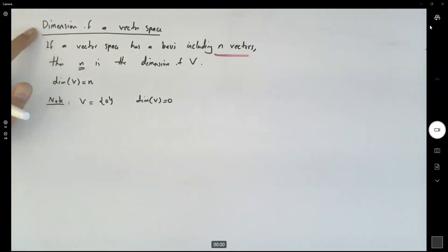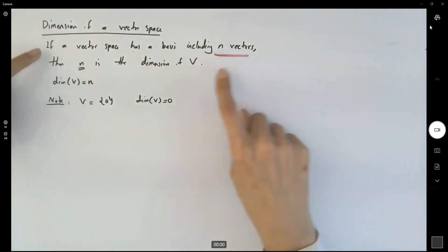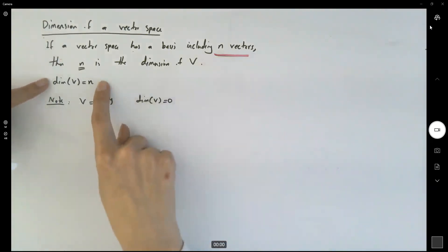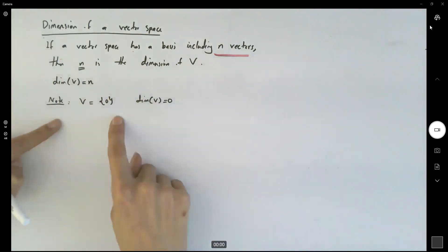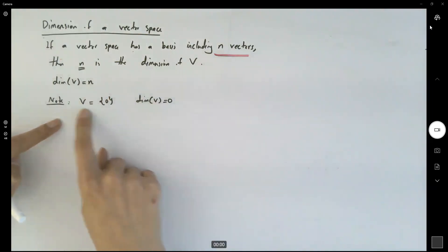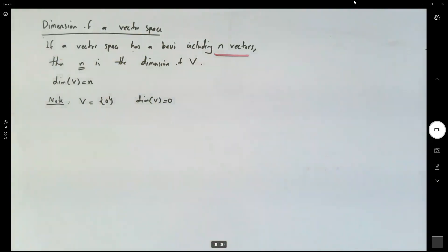The dimension of a vector space. If a vector space has a basis including n vectors, then we say that the dimension of that vector space is equal to n. Please note that if your vector space has only the zero vector, by convention the dimension is zero.